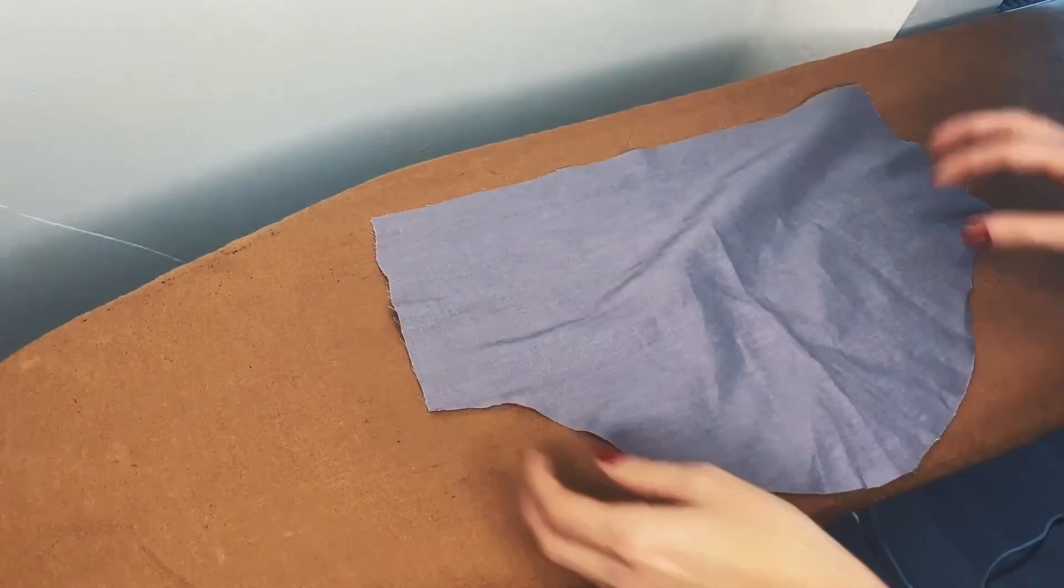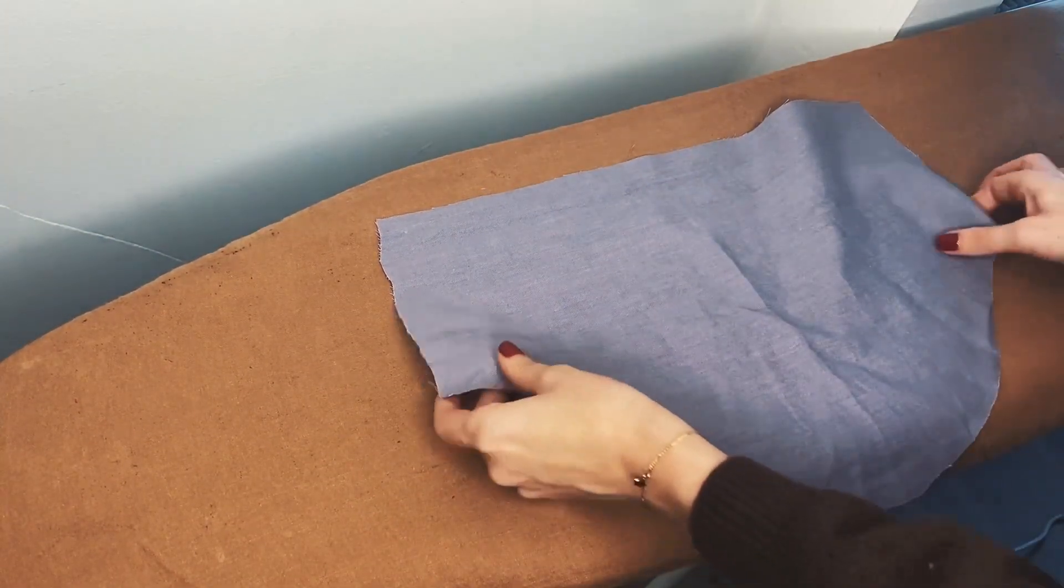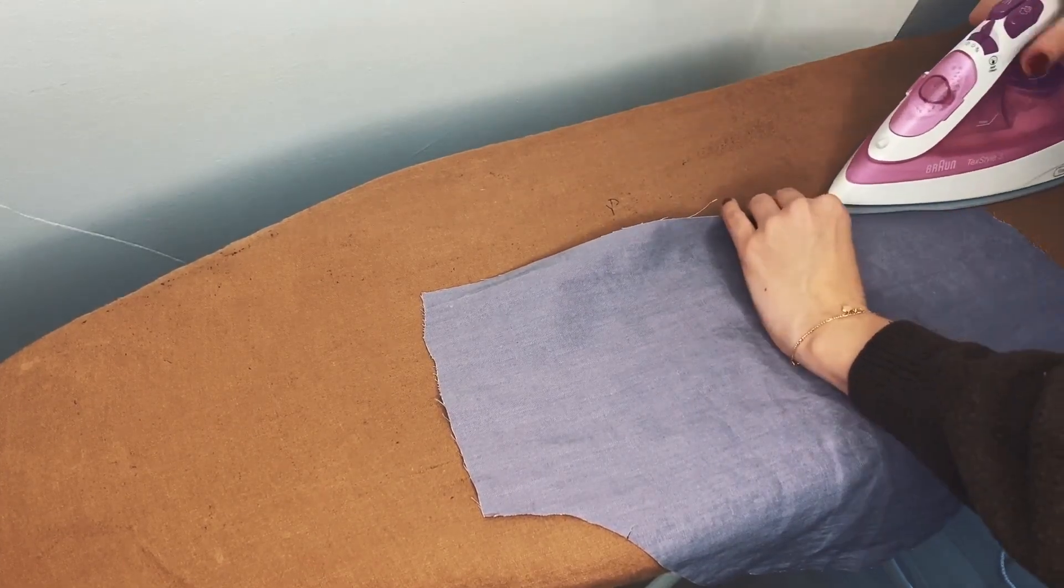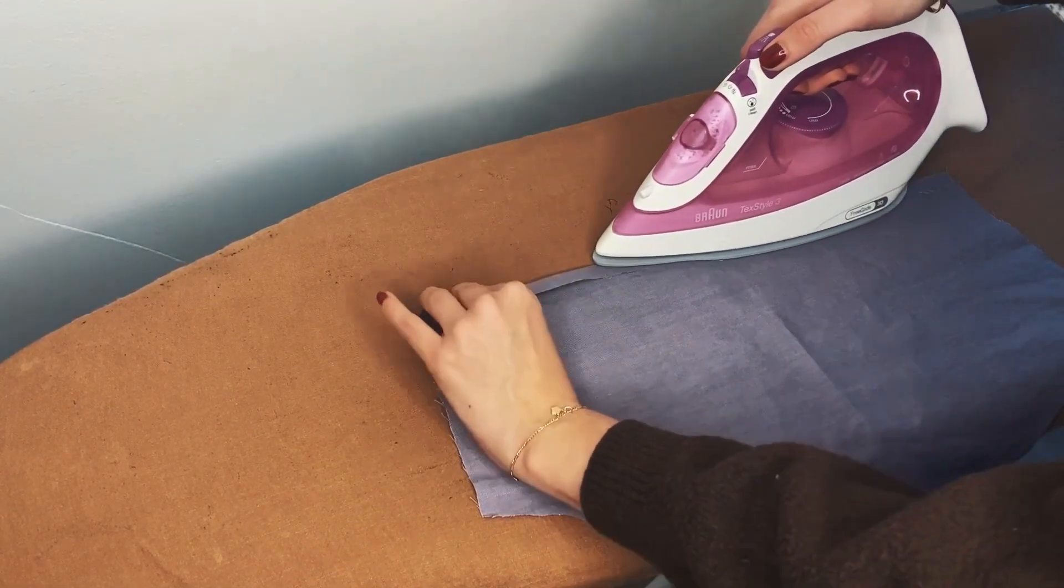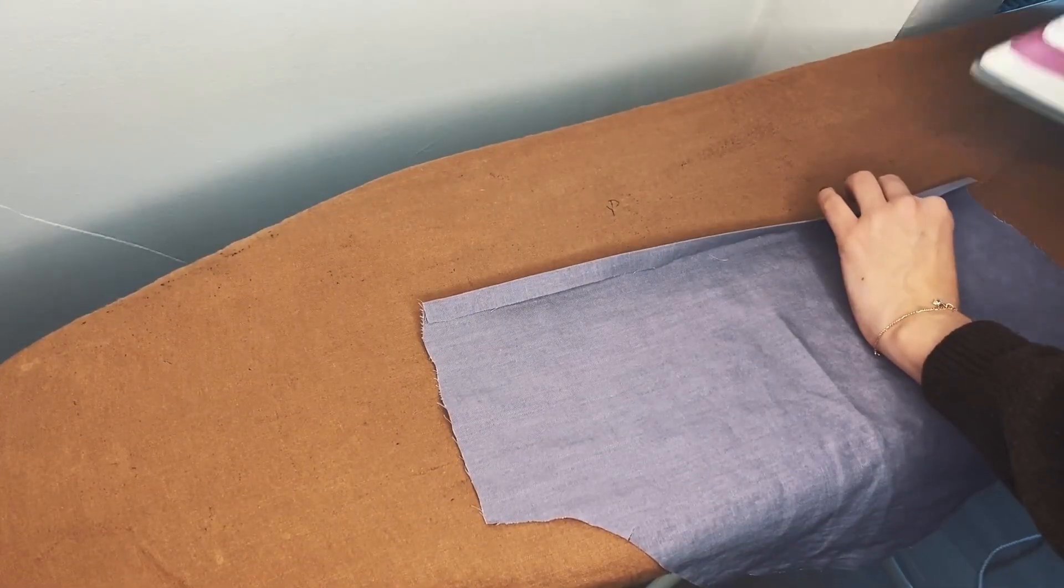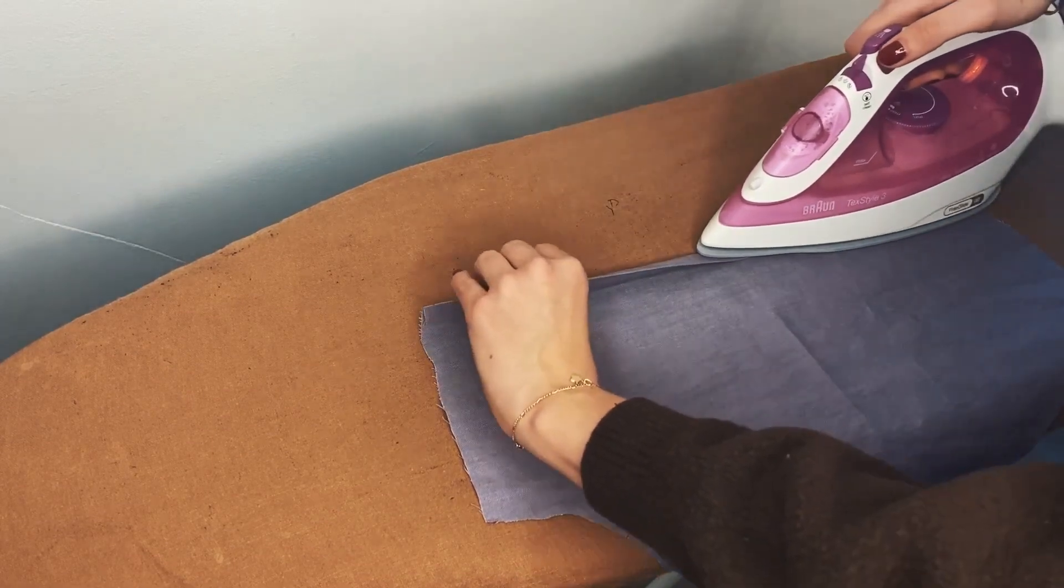Place the sleeve on the ironing board, ensuring that the wrong side of the fabric is facing upwards. Check on which side the notch is, in my case the left side. Fold the bottom of the sleeve up by 1 cm and press it with an iron to create a crisp fold. Fold the same edge over by another 1 cm, aligning it with the previous fold, and press it again with the iron to secure the fold.